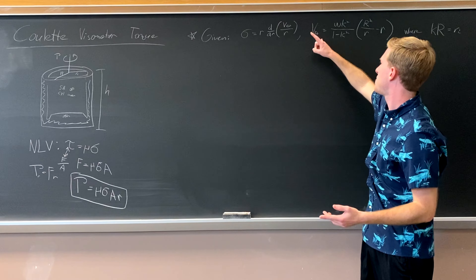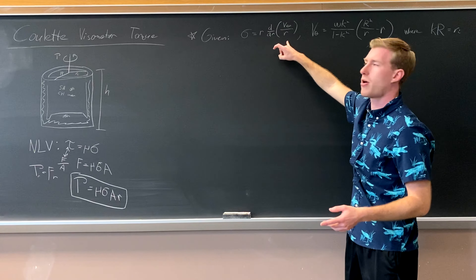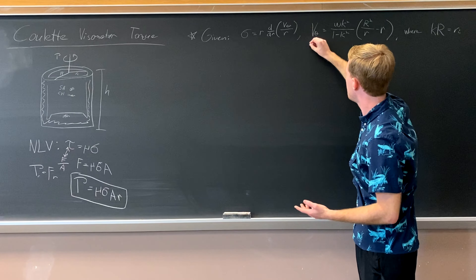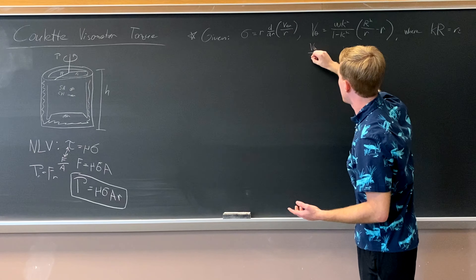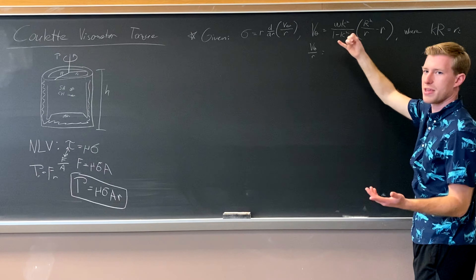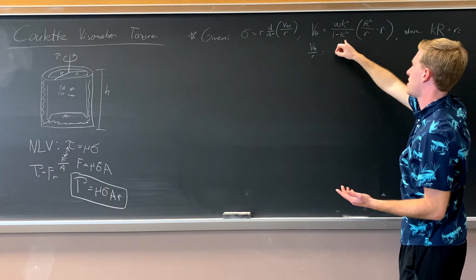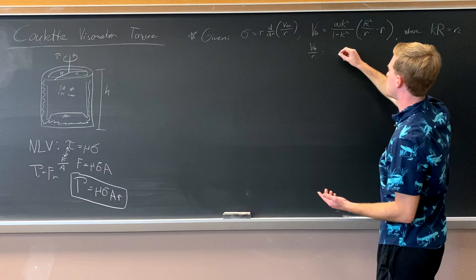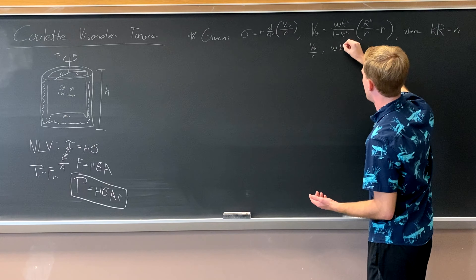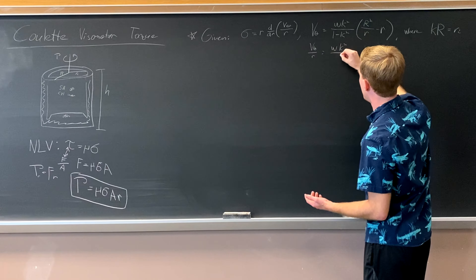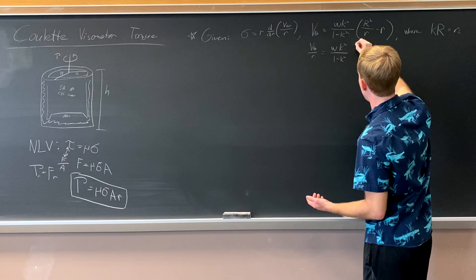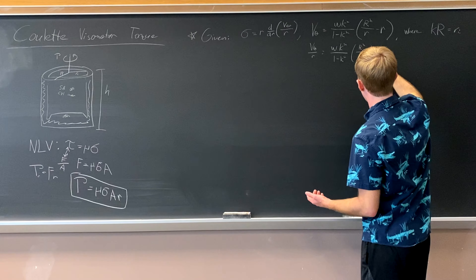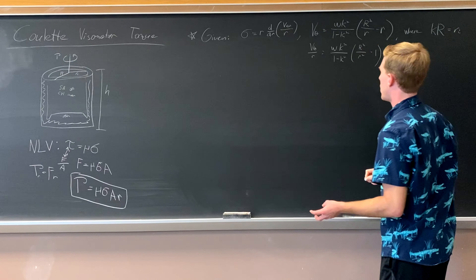So we start the derivation. The first thing we want to do is divide v_theta by r. Since most terms don't have r in them except for the last part, v_theta over r equals omega k squared over (1 minus k squared) times (capital R squared over r squared) minus 1.